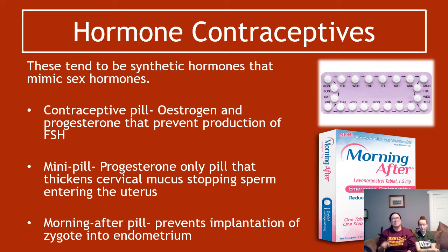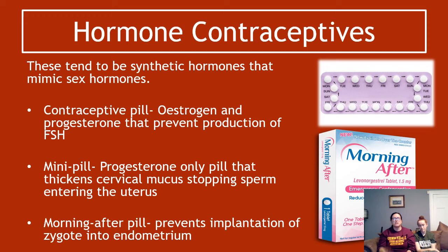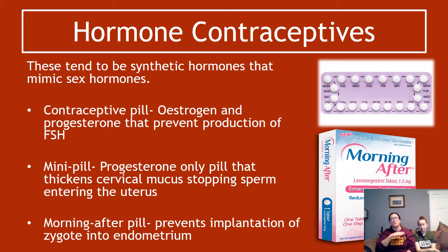Hormonal contraceptives tend to be synthetic, human-made hormones that mimic sex hormones. For example, the contraceptive pill is either oestrogen and progesterone or synthetic equivalents. What they do is prevent production of FSH. Normal oestrogen inside the body inhibits FSH production, inhibiting follicle production. So if you take artificial oestrogen, you inhibit FSH production, meaning no follicles — so that should mean no pregnancy.